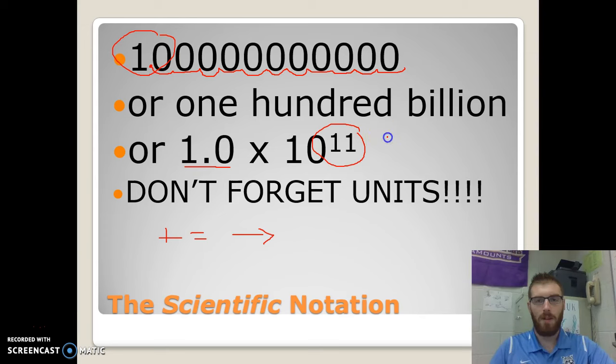Okay. If this number were to be a negative 11, that means the original number was very small, and we're going to move the decimal place to the left. So if the number is negative, we're going to move it to the left. Okay. Also do not forget to add your units. If you do not add your units, we don't know what you're talking about. The answer will be wrong. All right. Thank you.